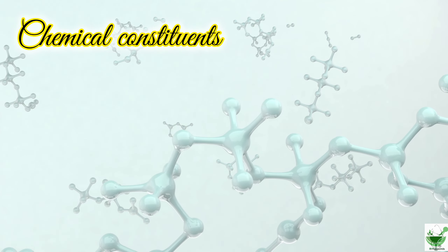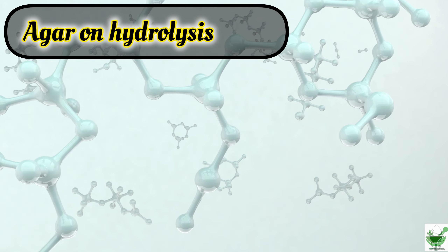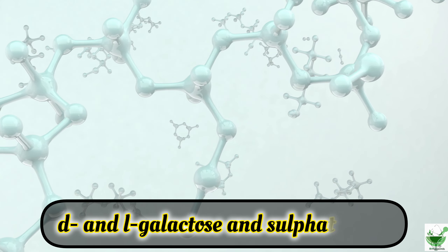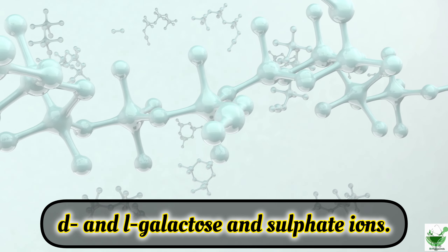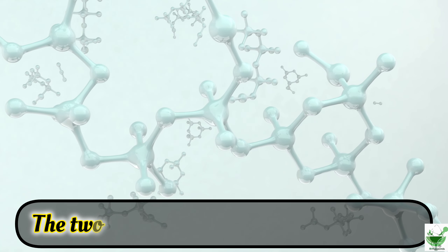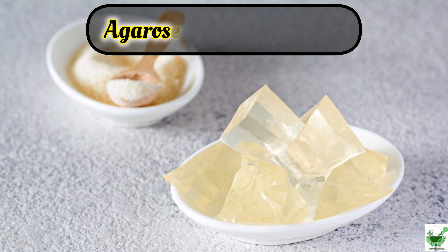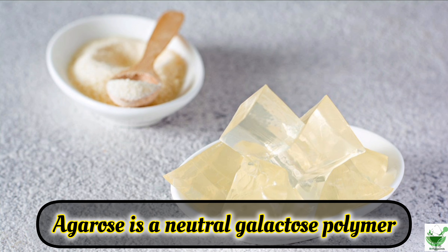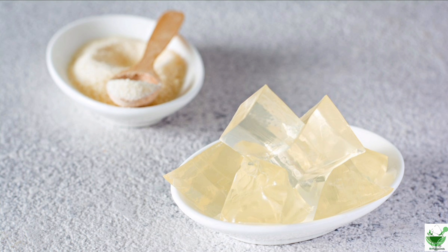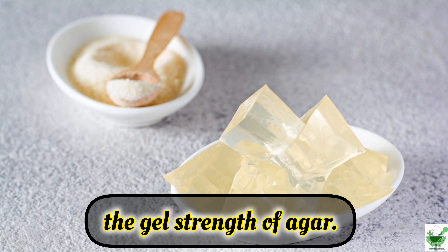Chemical constituents: Agar on hydrolysis yields D and L galactose and sulphate ions. The two primary constituents are agarose and agaropectin. Agarose is a neutral galactose polymer, free from sulphate, which is primarily responsible for the gel strength of agar.